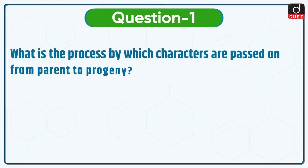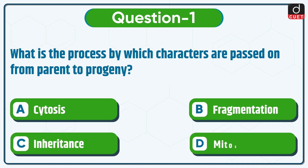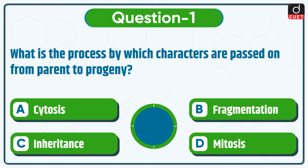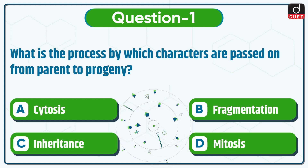Now let's begin today's session. First question is: what is the process by which characters are passed on from parent to progeny? Cytosis, Fragmentation, Inheritance, or Mitosis? The correct answer is option C, Inheritance.